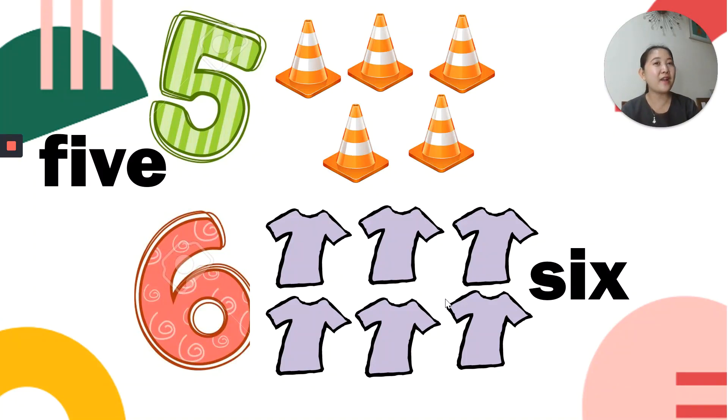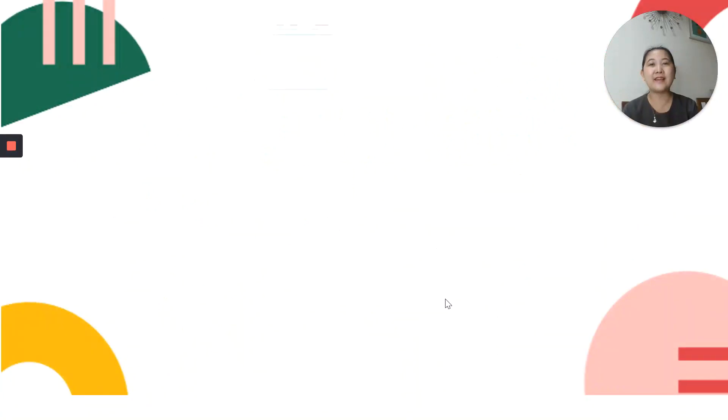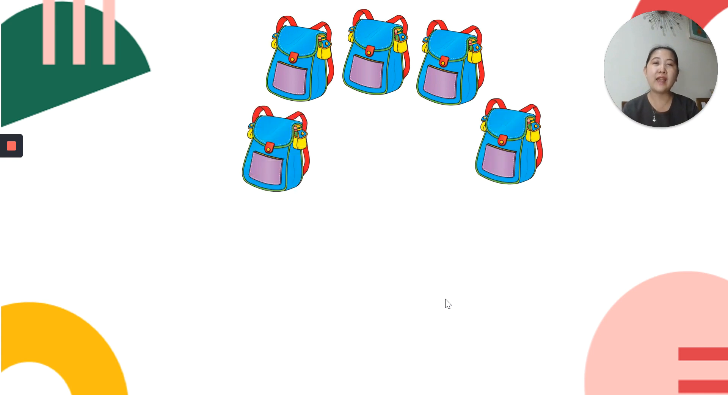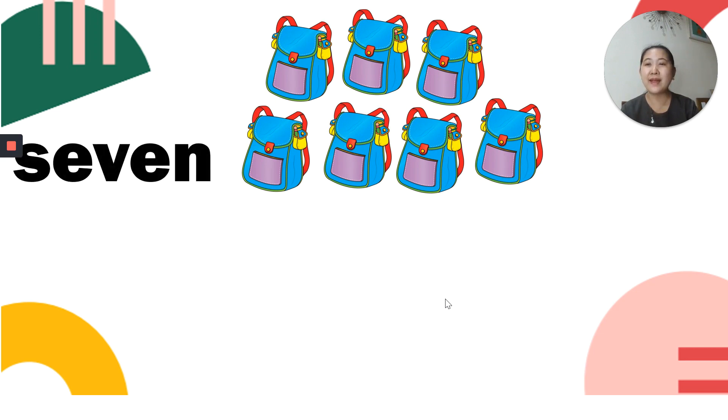Think again of the next number. Right! It's number 7. Let's count the number of bags. 1, 2, 3, 4, 5, 6, 7. There are 7 blue bags. That's how we write 7: S-E-V-E-N. Symbol is 7.